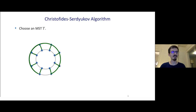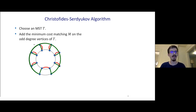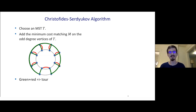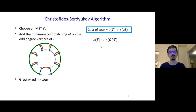Since there are odd vertices, the spanning tree doesn't correspond to a tour. If I was trying to go along the green edges and make a tour, I'd be stuck because every vertex should have even degree. To fix this, we add the minimum cost matching on the odd vertices of the tree, and this makes every vertex even. So this gives us a tour. Now let's look at how much it costs: it's the sum of the cost of the tree and the cost of the matching. Since opt itself is a tree plus an edge, the cost of the minimum spanning tree is at most opt.